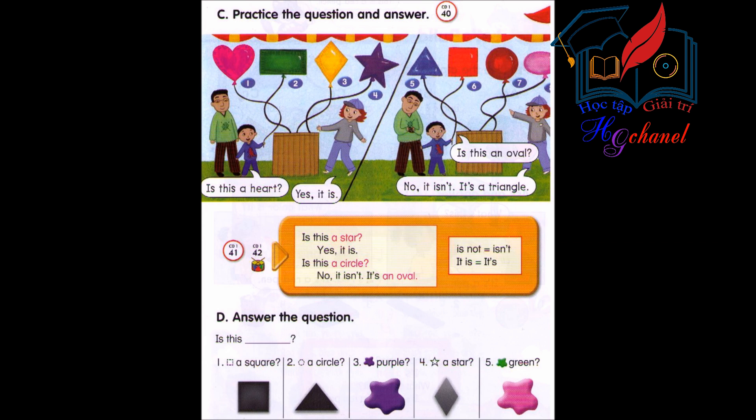Is this a circle? Is this a circle? No, it isn't. It's an oval. Is this a triangle? No, it isn't. It's a square. Is this a star? Yes, it is.